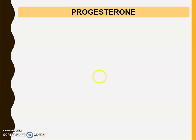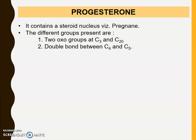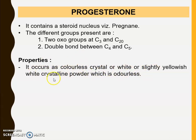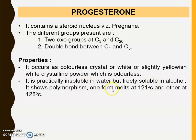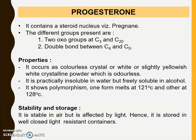The next drug is Progesterone. It is a steroidal drug and mainly a pregnane derivative. It differs from other steroidal drugs in having more than 20 carbon atoms in its nucleus structure. The different groups present are: two hydroxy groups at C3 and C20 positions, and a double bond between C4 and C5. Properties: it occurs as colorless crystals or white to slightly yellowish-white crystalline powder, and is odorless. It is practically insoluble in water but freely soluble in alcohol. It shows polymorphism — one form melts at 121°C and the other at 128°C. It is stable in air but affected by light, hence stored in a well-closed, light-resistant container.